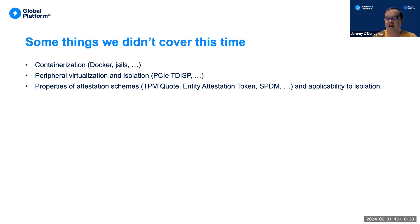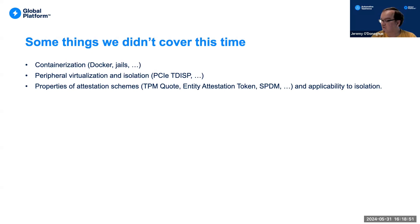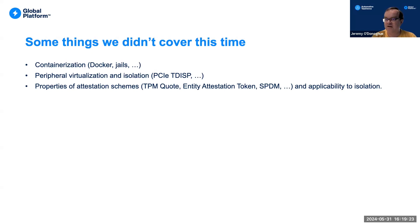This is a huge topic and I have barely skimmed the surface. I didn't talk about containerization — another technique for providing partitions within a more process-like environment; Docker is one of the best known, and things like JAILS and SE Linux also provide additional guarantees. I didn't talk much about peripheral virtualization and isolation, things like PCIe SRIOV. And I didn't talk very much about the properties of different types of attestation scheme — there are many. These are all in scope for the work we're doing. We will be producing a survey document, which I hope will be out towards the end of the year — I would be delighted to see anyone on this call participate in that work and provide contributions.